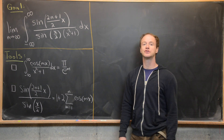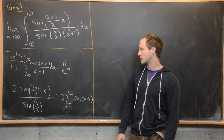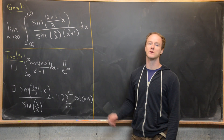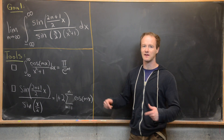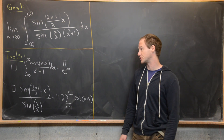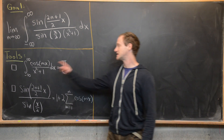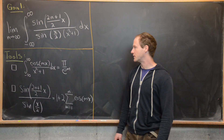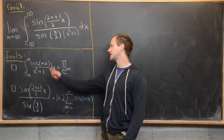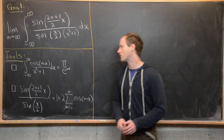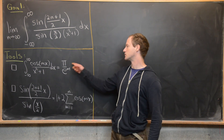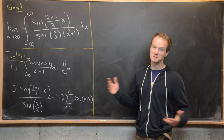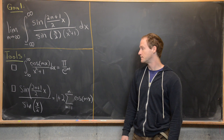We're going to use two tools to make this calculation. The first tool was proven in a previous video, and it says that the integral from minus infinity to infinity of cosine(mx) over x squared plus 1 dx equals π over e to the m. That's a nice result on its own.